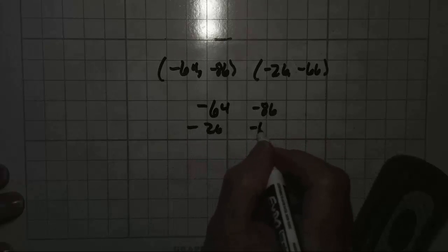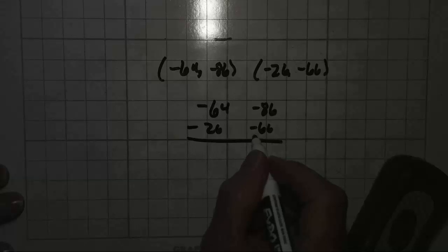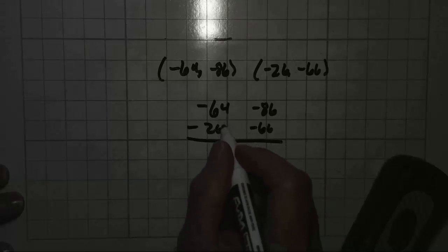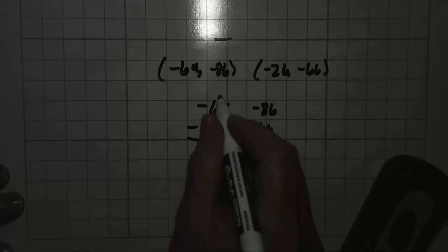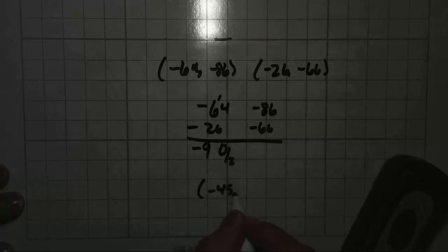And we're going to add negative 64 plus negative 26. So that's negative 90. Negative 90 divided by 2 is negative 45. That's your x coordinate.